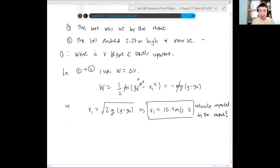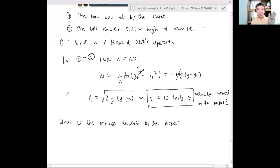So that's our velocity that we want, the velocity that the racket imparts to the ball. Now the question now is, what is therefore the impulse? What is the impulse delivered by the racket?